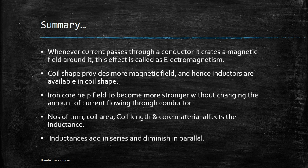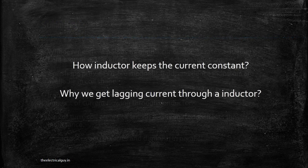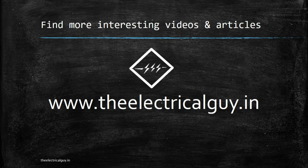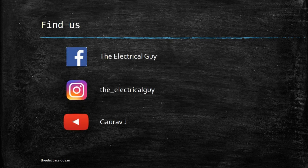The interesting part about inductors is that, as we have seen, an inductor stores the magnetic field or flux and tries to keep the current constant — no matter what the input is, it will try to keep the current constant. The question is: how does an inductor keep the current constant, and why do we get lagging current through an inductor? We are going to answer these questions in our next video. To receive the next update, visit our website at www.theelectricalguy.in, or find us on Facebook, Instagram, or subscribe to our YouTube channel.